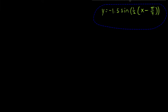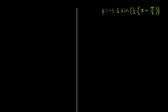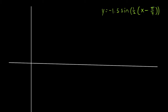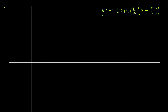Here's a sine function. I can see no vertical shift and a phase shift of positive pi over 4, so I'll give lots of room in the positive part of the x-axis. The midline is y equals 0. For amplitude, we check whether x is multiplied by a negative number — it's not, so the amplitude is negative 1.5 as written. We don't have to deal with any negatives here.